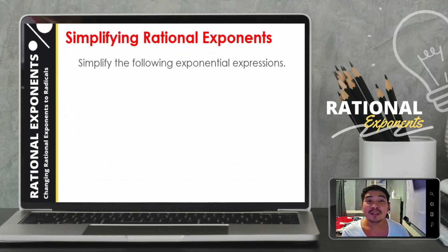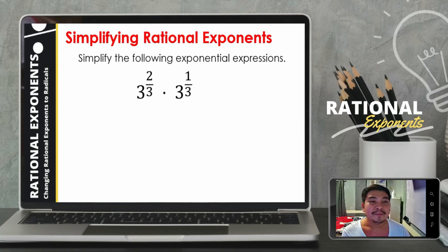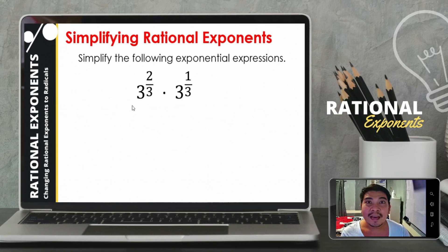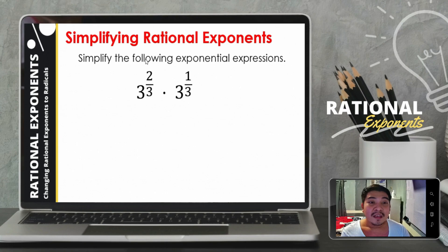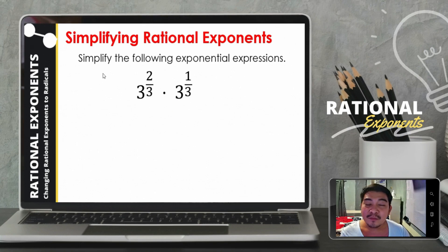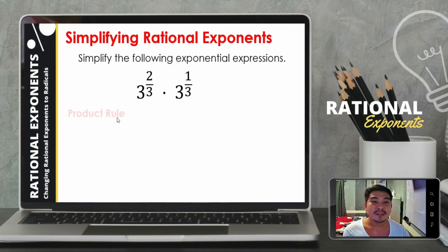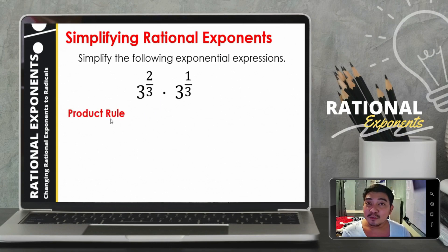Let us simplify rational exponents using the laws of exponents. For the first item, we have 3 raised to 2 thirds times 3 raised to 1 third. This is an expression with rational exponents. The bases are equal and we are multiplying the two expressions, so we can use the product rule.